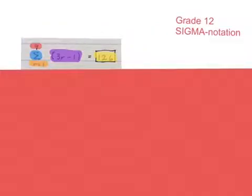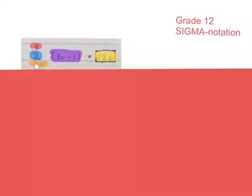If you look at a sigma notation sum, you will always find five things there. Firstly, the sigma itself — that's where the name came from — something up there, something down there, a general term there, and something there.